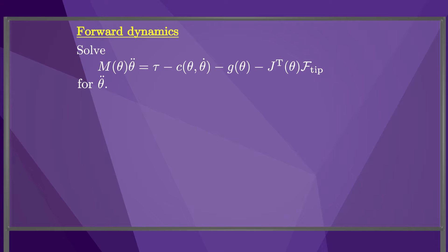The forward dynamics can be numerically integrated to simulate the motion of a robot. At each time step, you use the forward dynamics to calculate the joint accelerations, then use the accelerations and the current joint positions and velocities to calculate the joint positions and velocities at the next time step.